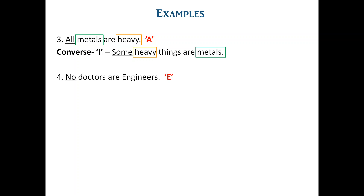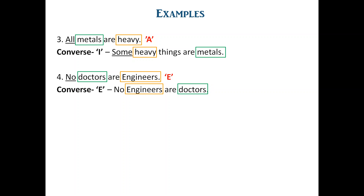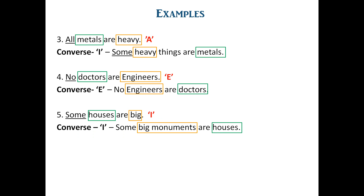Fourth example: 'No doctors are engineers.' The word 'no' makes this an E proposition. The converse of E remains E, so the symbolic form stays the same and only subject and predicate interchange. Subject 'doctors' and predicate 'engineers' are interchanged, giving the converse 'no engineers are doctors'. Fifth example: 'Some houses are big.' The word 'some' makes this an I proposition. The converse of I remains I; subject 'houses' and predicate 'big' interchange, giving 'some big things are houses'.